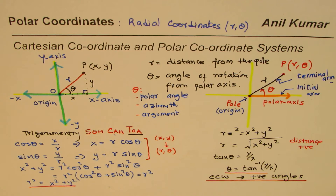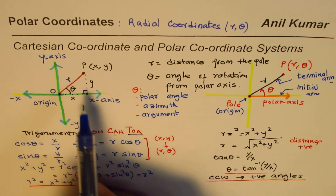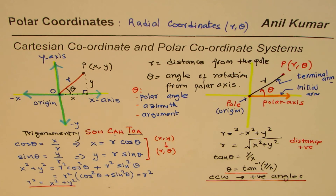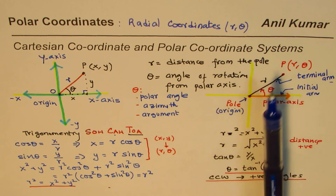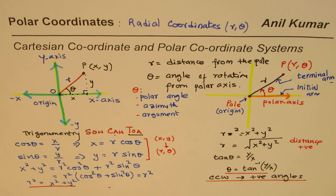In the following videos, we'll take examples to convert points from Cartesian — also called the rectangular system — to polar, and from polar to rectangular. We'll also look at equations and sketching curves. A major advantage of the polar coordinate system is that you can very easily sketch curves that are difficult to handle in the Cartesian system.